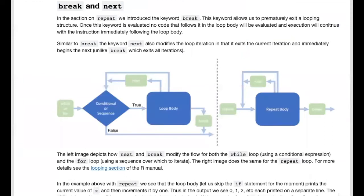In the previous section on repeat, we introduced the break keyword, which exits the nearest containing loop body. There is a similar keyword, next, which prematurely exits the current iteration of the nearest enclosing loop body and skips ahead to the next iteration — unlike break, which also skips all remaining iterations. The updated diagrams show break exiting to code following the loop, while next returns to the beginning of the repeat body, re-evaluates the while condition, or gets the next sequence element in a for loop.